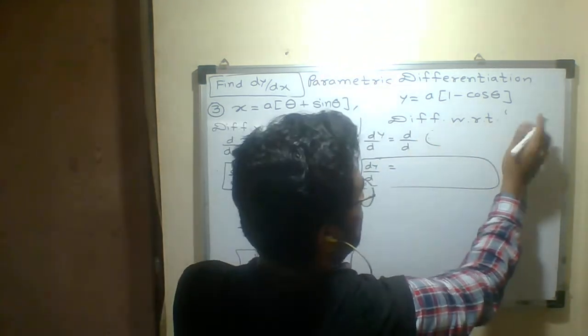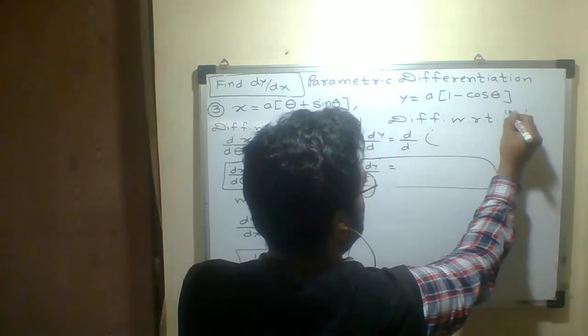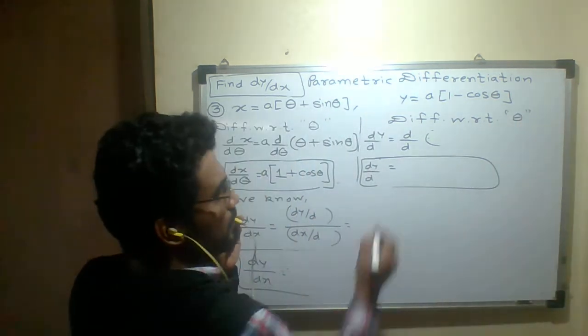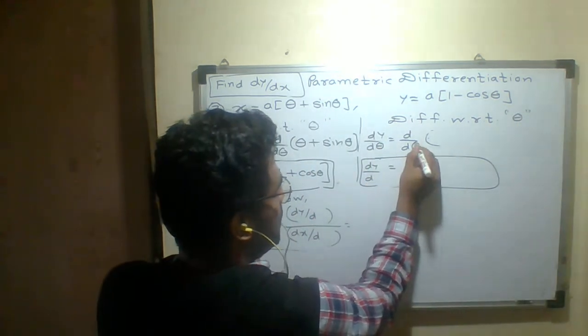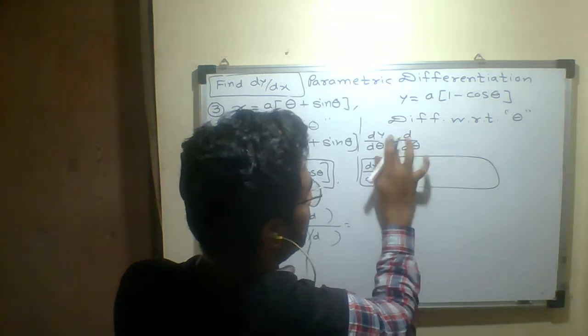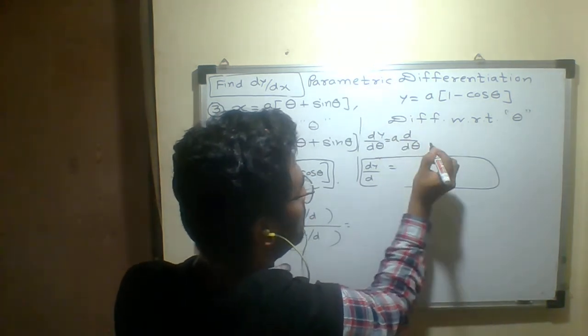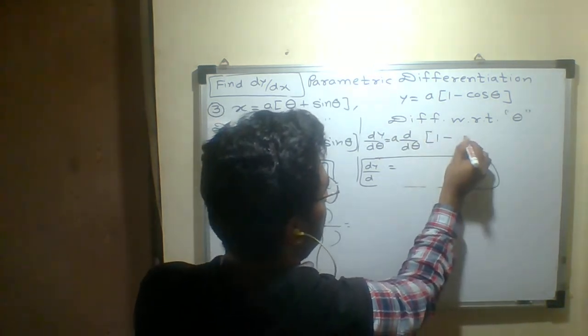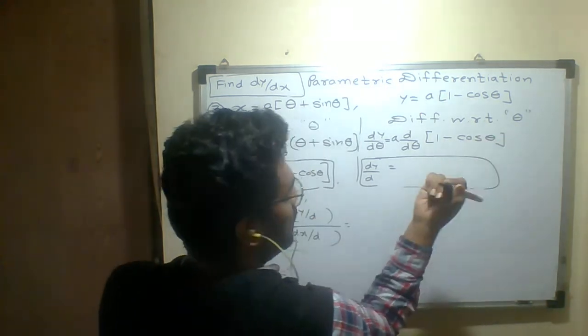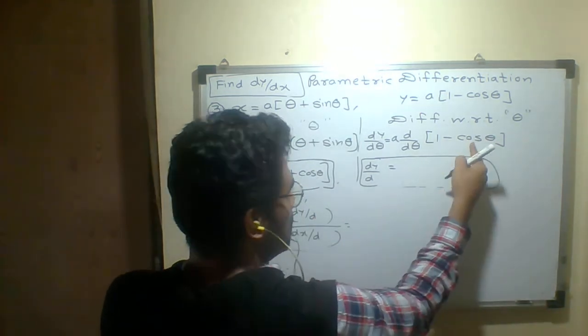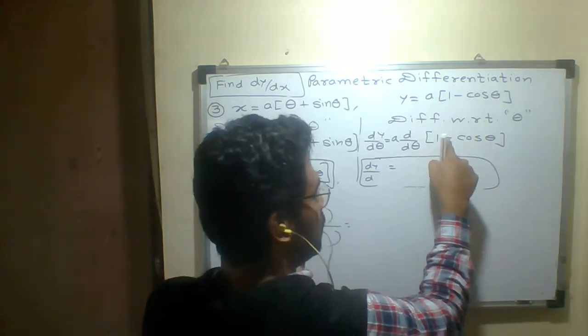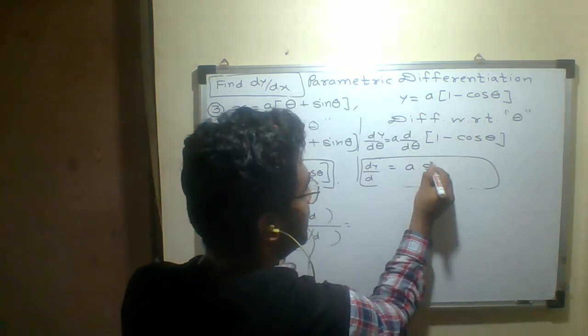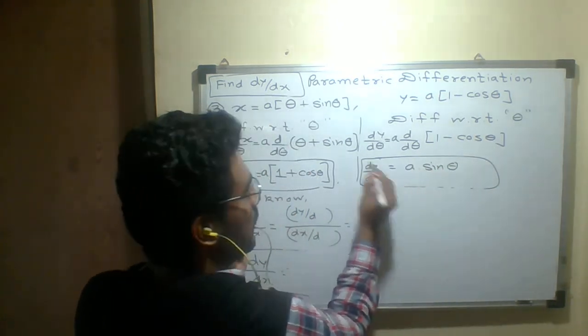Similarly, the parameter is θ, so we differentiate with respect to θ. dy/dθ of a(1 - cos θ). a is constant. What is the derivative of 1? 0. What is the derivative of cos θ? Minus sin θ. So minus minus gives us plus sin θ. Now we have dy/dθ.